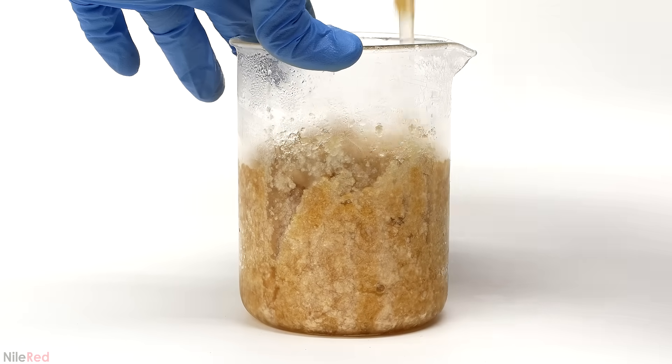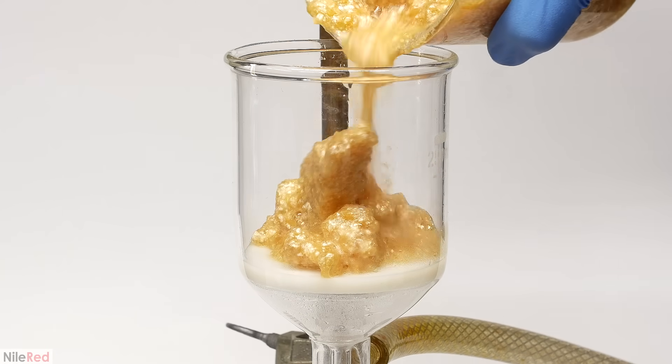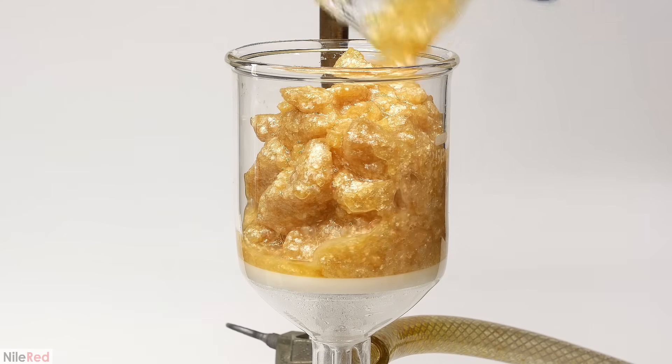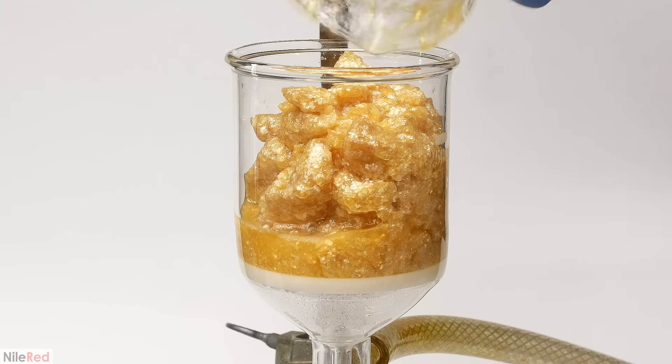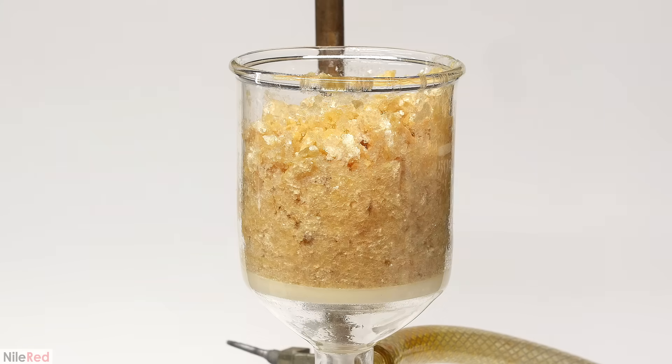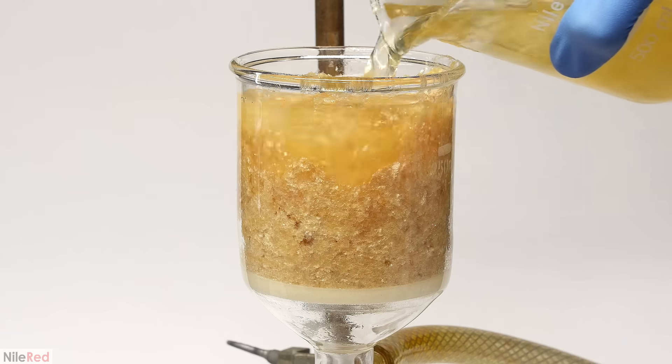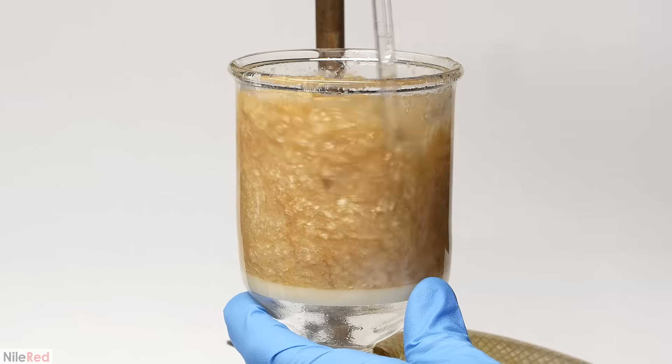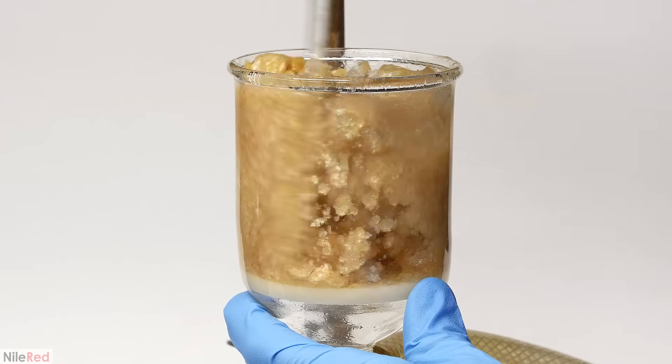break it into smaller pieces, and filter it off. The crystals here still aren't perfectly white, but it's definitely a lot better than before. When everything's been pulled through, I wash the beaker and the crystals a couple times with some ice cold dilute nitric acid.